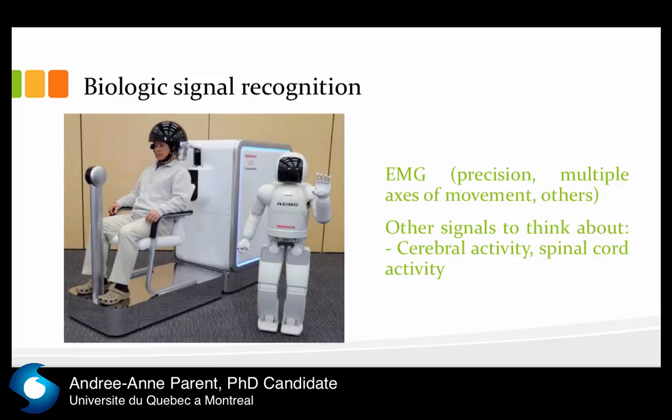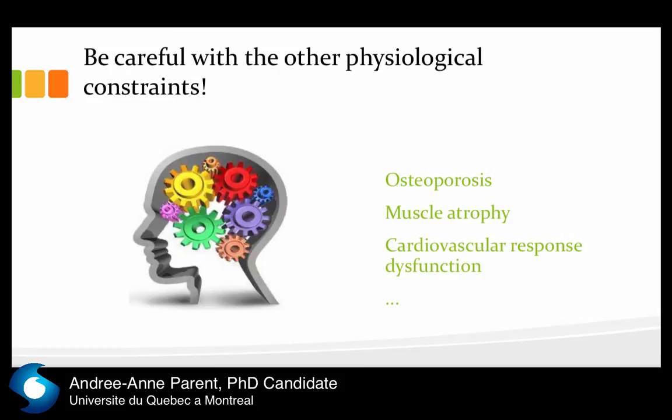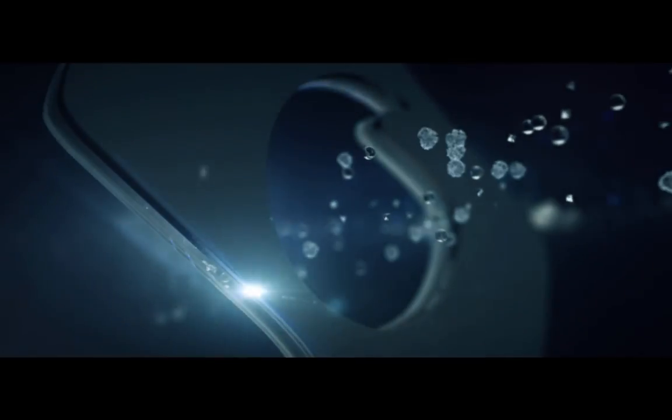Be careful with the other physiological constraints: osteoporosis, muscular atrophy, cardiovascular response, and dysfunction — as we've seen across the different populations. Just identify what your target population is, what the major physiological constraints are, and address those carefully.